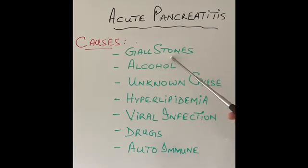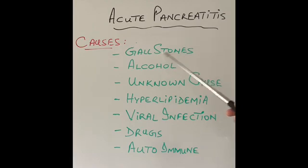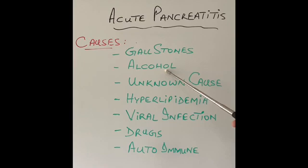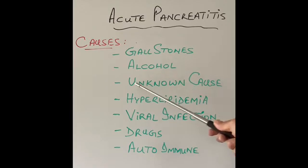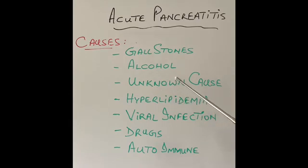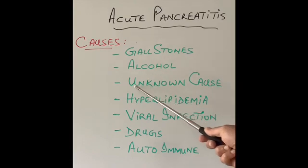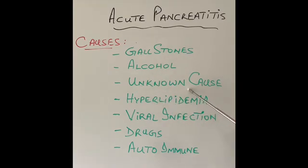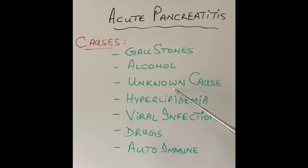The commonest cause will be gallstones, and I'll explain in a minute how they cause acute pancreatitis. The second commonest cause is excessive intake of alcohol, especially binging of alcohol. The third common cause remains unknown — nobody knows. Sometimes acute pancreatitis happens despite all the tests and investigations, and doctors still can't find the cause, so that's called unknown cause or idiopathic pancreatitis.